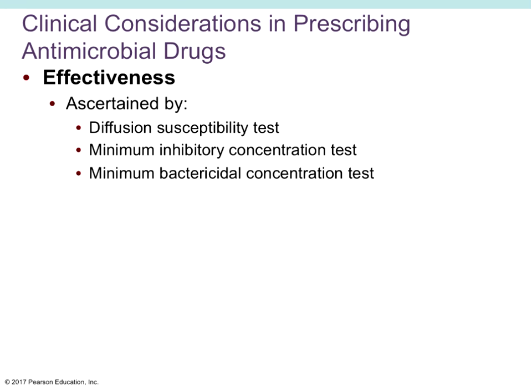The effectiveness of antimicrobial drugs is determined by the diffusion susceptibility test, the minimum inhibitory concentration (MIC) test, and the minimum bactericidal concentration (MBC) test. The MIC test asks how concentrated the drug needs to be to inhibit the bacteria from doing what we don't want. The MBC test asks what minimum concentration is needed to kill the bacteria. The diffusion susceptibility test measures how far the drug will diffuse while still having microbes be susceptible to it.